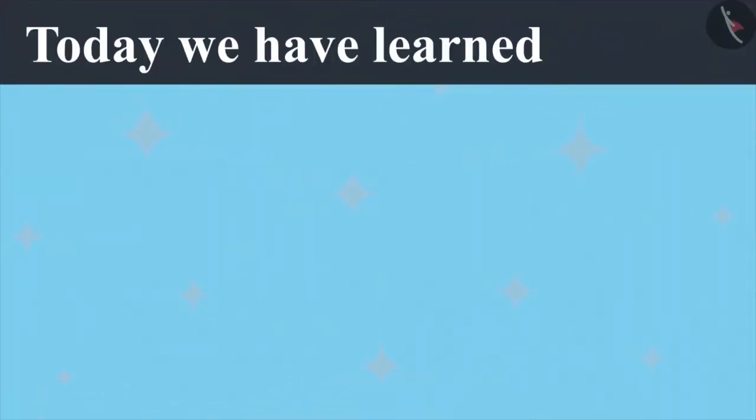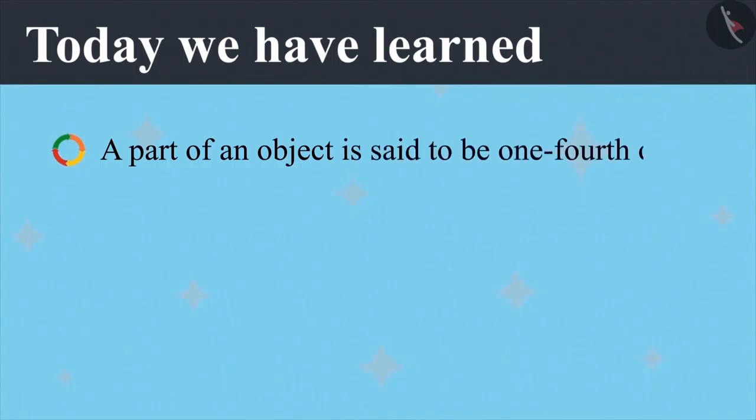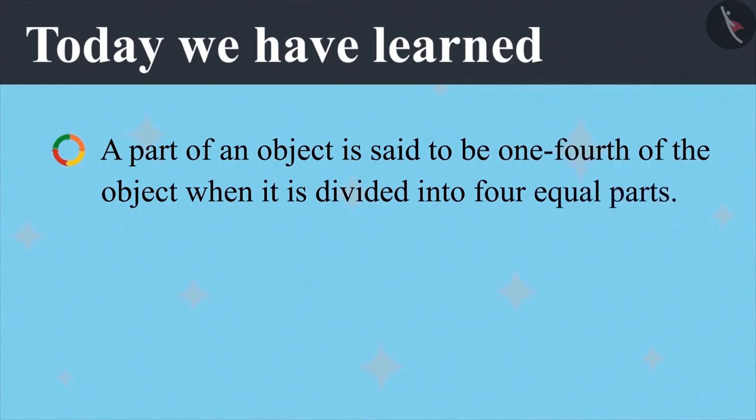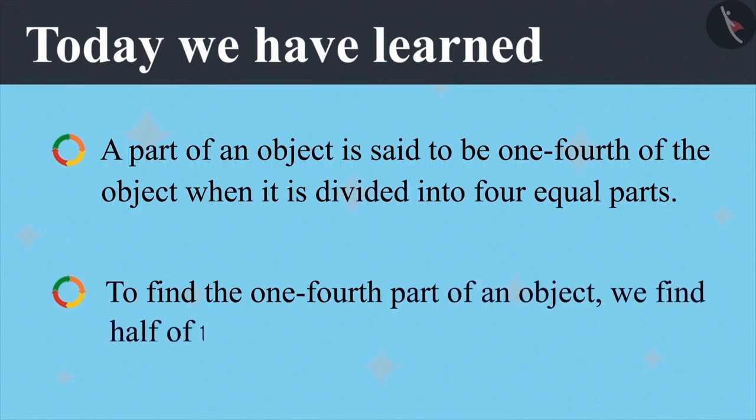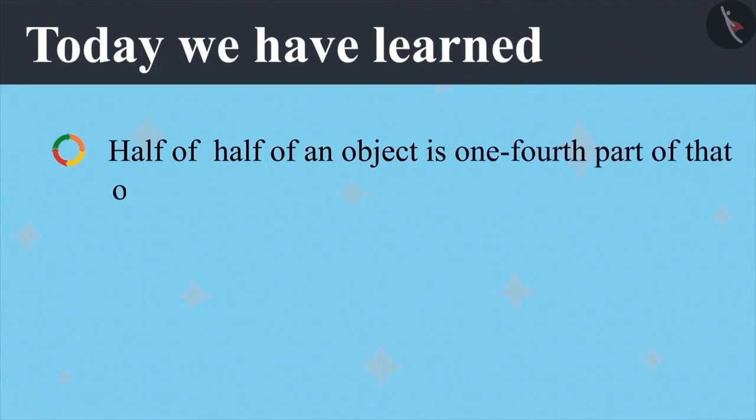Now, this paper is divided into four equal parts and each part is one-fourth part of the whole paper. Yes, Vandana. Today, we have learned a part of an object is said to be one-fourth of the object when it is divided into four equal parts. To find one-fourth part of an object, we find half of the half of an object. We can also say that half of half of an object is one-fourth of that object.